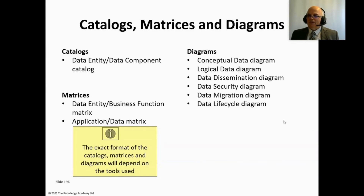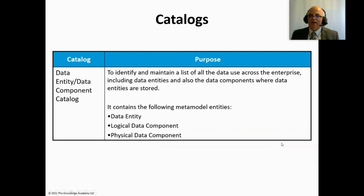We have catalogues, matrices, and diagrams relevant to data architecture. There is one catalog: the data entity/data component catalog, which identifies and maintains a list of all the data used across the enterprise, including data entities and data components.